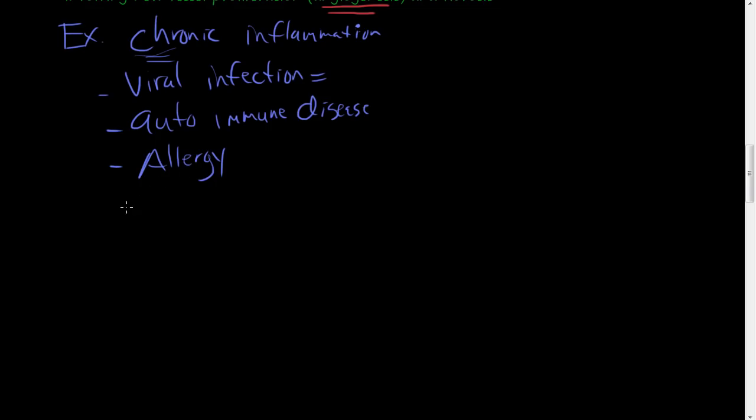Another example is exposure to toxic agents. A common example is silica. If you're exposed to silica over long periods of time, you get a disease called silicosis which affects your lungs.